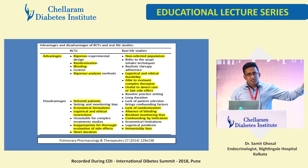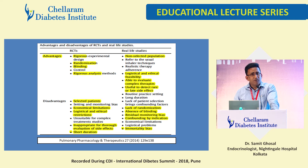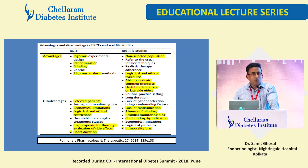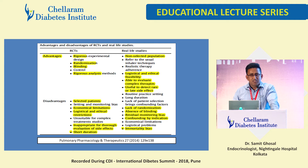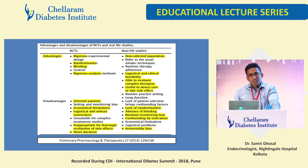The advantages of RCTs: they are blinded, rigorous, and randomized. No one knows what's happening, so they are devoid of biases — selection bias, immortality bias, and many others. But there are disadvantages as well.